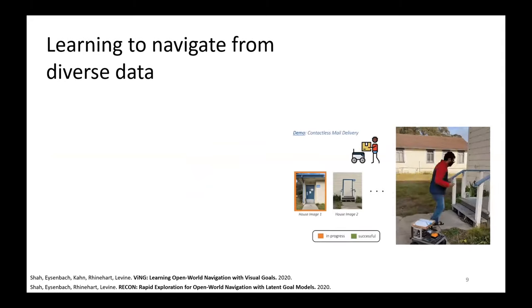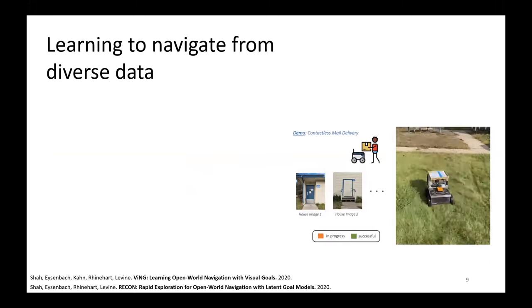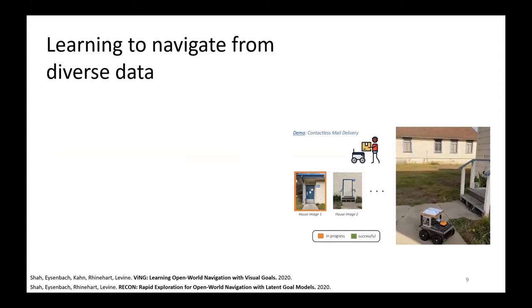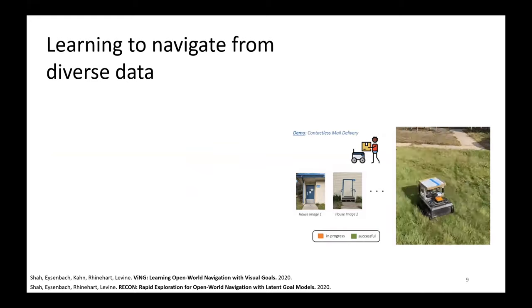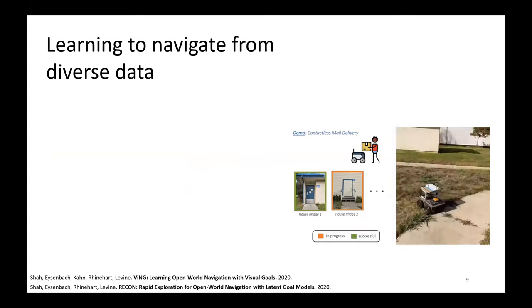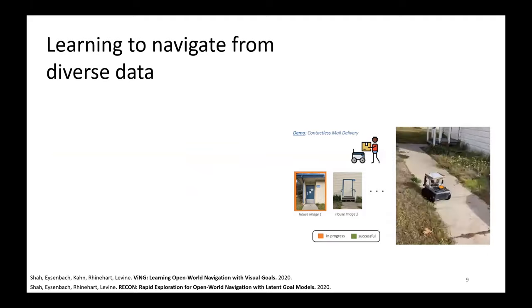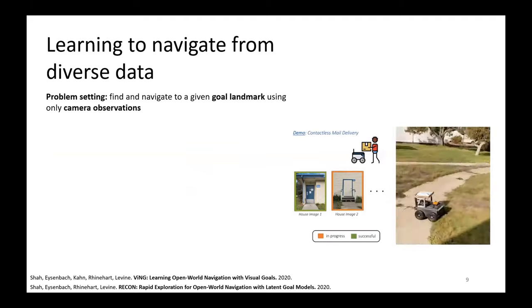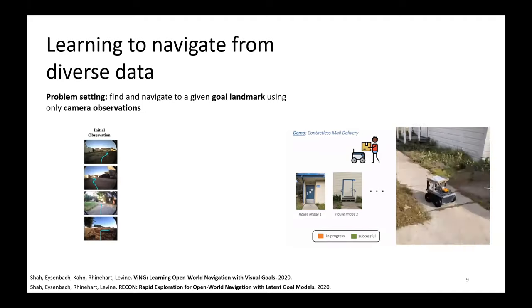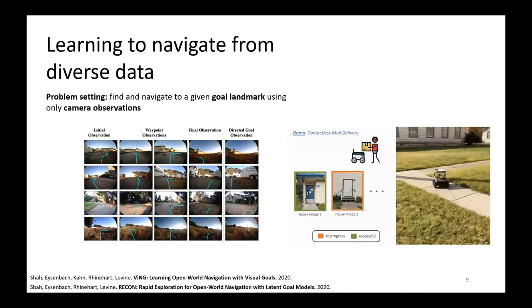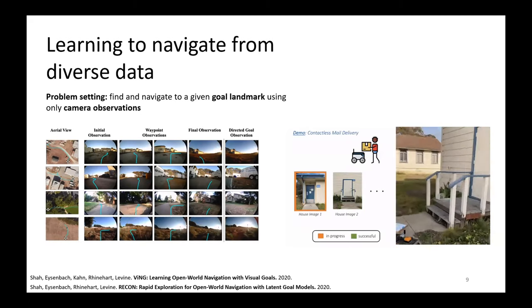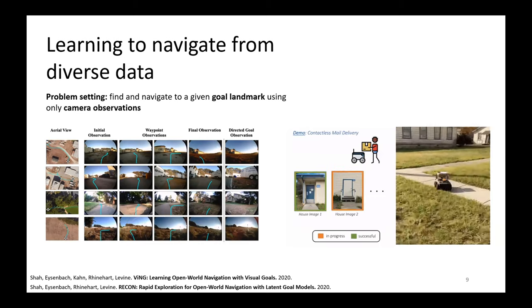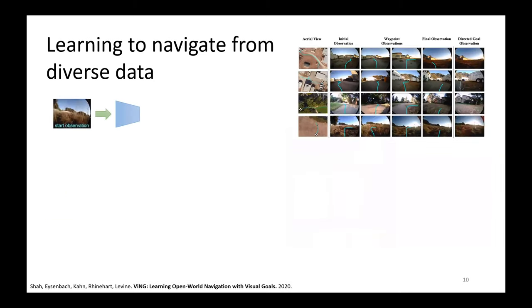Let me describe some work that we've done that actually uses this method — first for straight-up goal reaching, and then we'll extend it as a general pre-trained backbone. This is a project we did about three years ago where we just wanted to explore this way of training models. The user specifies an image as a goal: they take a photograph of their front door, and the robot is supposed to deliver something — in this case some mail or pizza — to their front door. The robot finds and navigates to a given goal landmark using only camera observations. The model is pretty much a straightforward instantiation: there's an encoder that takes in the current observation, an encoder that takes in a goal observation, and it predicts the number of time steps between them and the action to take at the current step, trained directly with the dataset.